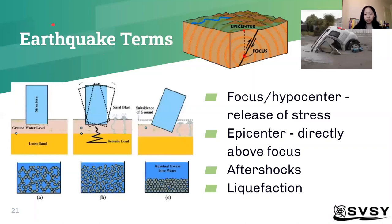Here are some earthquake terms. The focus of the earthquake, also known as the hypocenter, is where the stress is released. The two sides are held together by friction, and when the plates move, a lot of energy is released once the friction is overcome. This energy is represented in concentric circles. The epicenter is directly above the focus, and it maps where the earthquake is with respect to the landforms and cities.